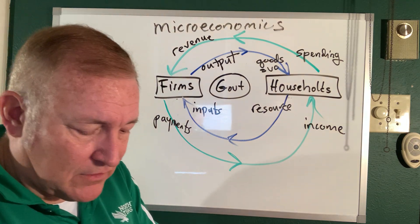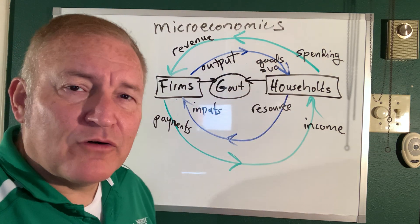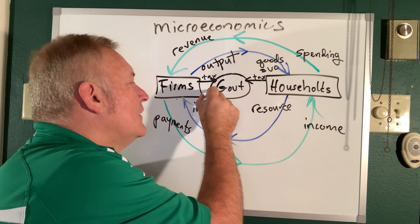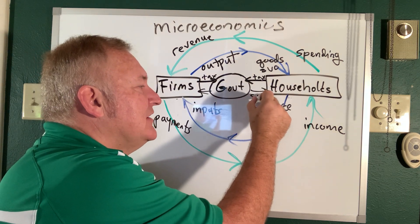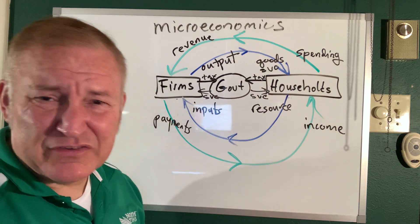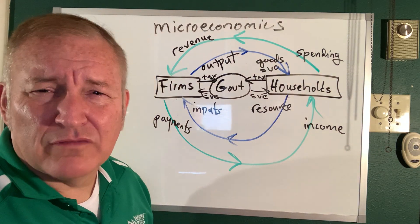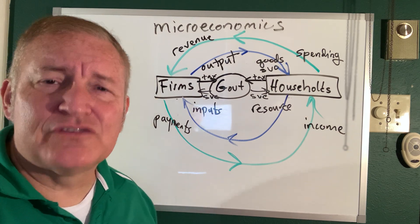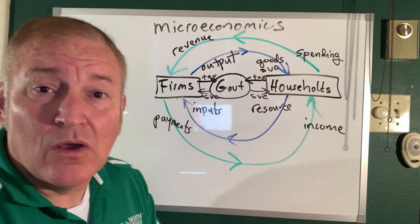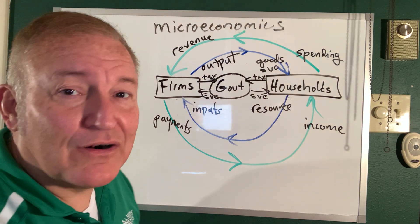The last thing is the government. What do firms and households give the government every year? Taxes. And what does the government give in exchange? Services — such as defense, infrastructure, roads and bridges, rule of law, well-defined property rights. That's actually one of the big discussions going on right now in society: exactly what services should the government provide in exchange for those taxes.